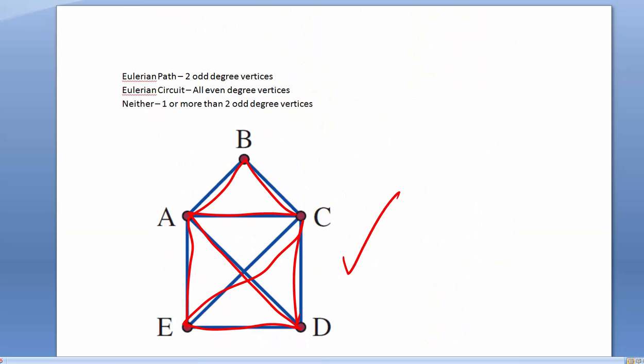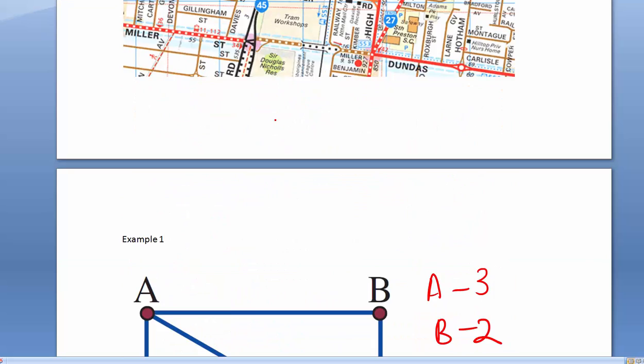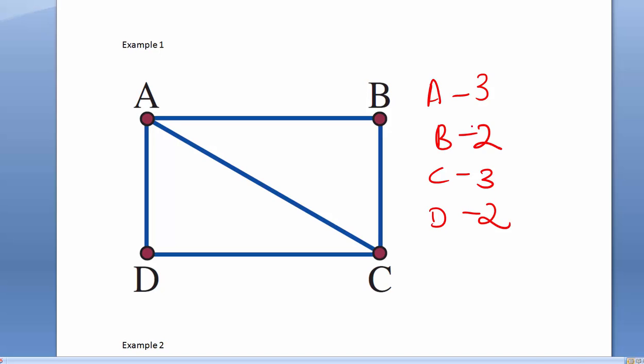Now, what we know about Eulerian path circuits or others is that an Eulerian path is possible when there's 2 odd-degree vertices. An Eulerian circuit is possible when all vertices have an even degree, and neither is possible if there's 1 or more than 2 odd-degree vertices. So, let's just check out what's happened here. We've got 2 odd-degree vertices, so according to the definition, what we're going to get is an Eulerian path.